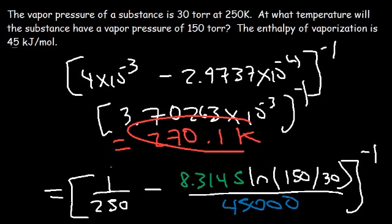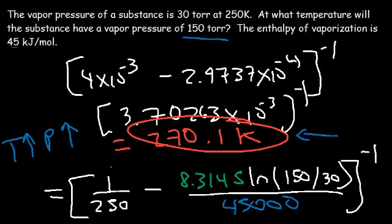So the new temperature is 270.1 Kelvin. We can verify this makes sense: at a higher vapor pressure, the temperature must be higher, so the answer should be above 250 Kelvin — and it is. Now you know how to calculate the new temperature when given a different vapor pressure.